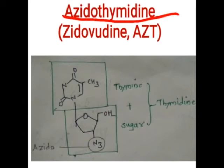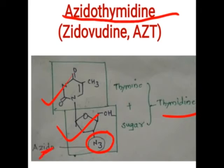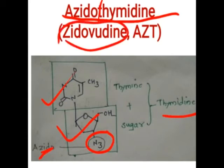The first drug among nucleoside reverse transcriptase inhibitors is zidovudine, also called azidothymidine. This is the structure of thymine combined with a sugar — together called thymidine — but in zidovudine the hydroxy group is absent and replaced by an azido group (N3). Since N3 is present instead of the hydroxyl, and it is a thymidine derivative, this drug is called azidothymidine, commonly known as AZT or zidovudine.